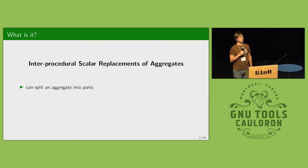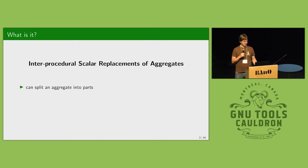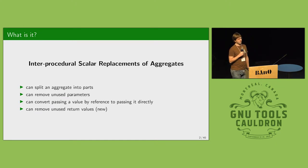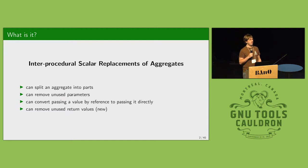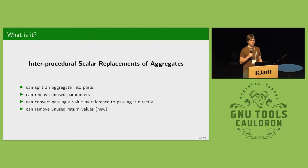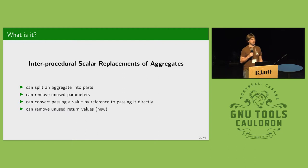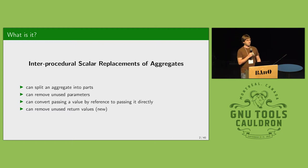The pass can split aggregates into parts, but it became quite obvious there are a few other useful things it could do. The most simple one is removal of unused parameters. It was also clear that when dealing with values passed by reference that could be passed by value, it would be worthwhile to convert them. I've been asked over the years to also do the same for return values, which until now was not possible, but with this new implementation it is.